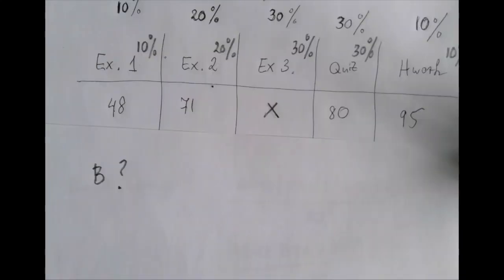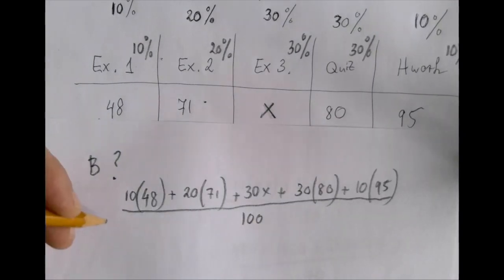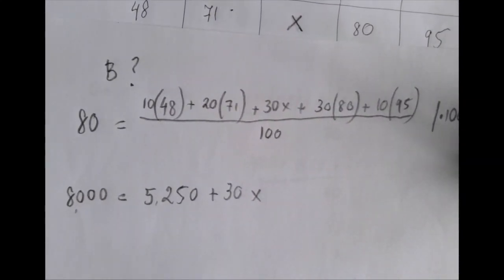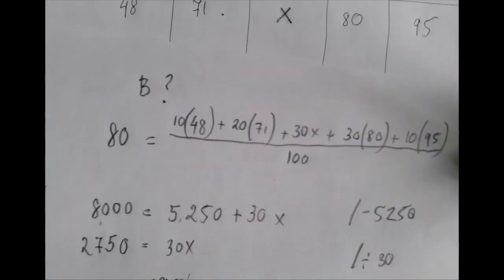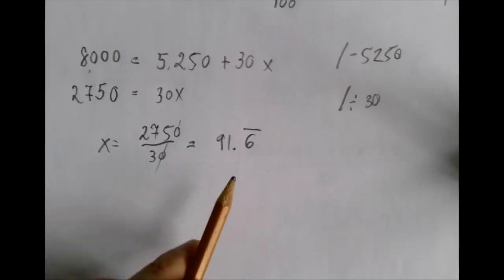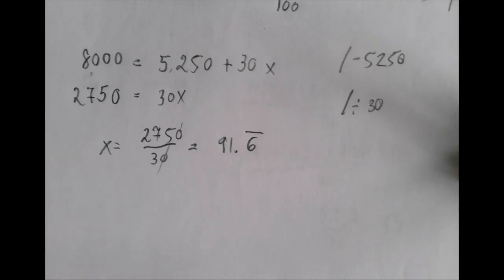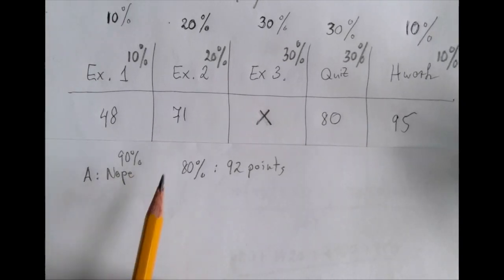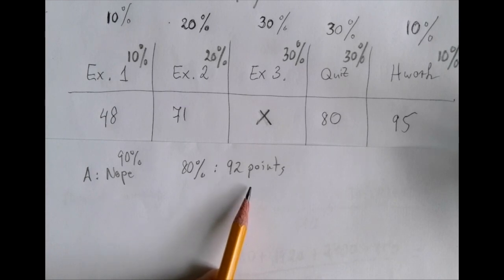What about a B? We couldn't bring the average to 90, but maybe we can bring it to 80. Setting up the same equation with 80 instead: 8,000 = 30X + 5,250, solving gives X ≈ 91.67. So we'd need to score at least 92% on the final — a convincing A — just to get a B. But a B is definitely possible. Our current average is 75%.